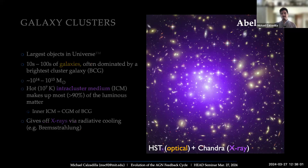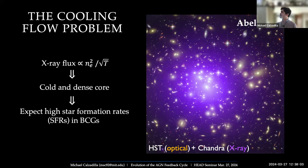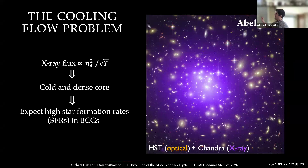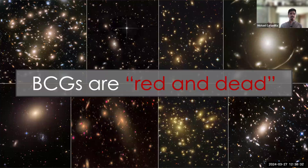Importantly, the ICM gives off X-rays via radiative cooling. The X-ray flux scales with density squared and temperature. When you look at an X-ray image, as you go toward the center, it gets brighter — you're getting more flux — which tells you that you're getting a colder and denser core. By virtue of being at the bottom of a really deep gravitational potential, BCGs should be the bluest, most star-forming galaxies in the universe. But in reality, BCGs are red, passively evolving elliptical galaxies — red and dead.